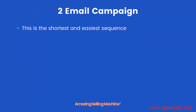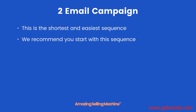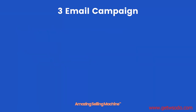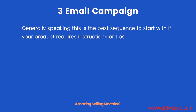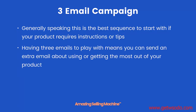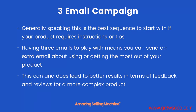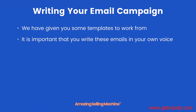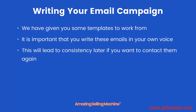A two-email campaign is the shortest and easiest sequence, and we recommend you start with this. If you have a product that needs extra instructions or tips for use, then start with the three-email campaign. Generally speaking, this is the best sequence to start with if your product requires instructions or tips. Having three emails to play with means you can send an extra email about using or getting the most out of your product. This can lead to better results in terms of feedback and reviews for a more complex product. We have given you some templates to work from, but it is important that you write these emails in your own voice. This will lead to consistency later if you want to contact them again, so do not just copy and paste these email templates.